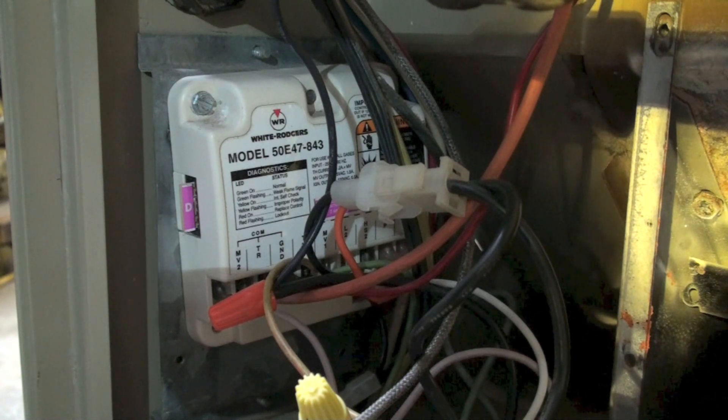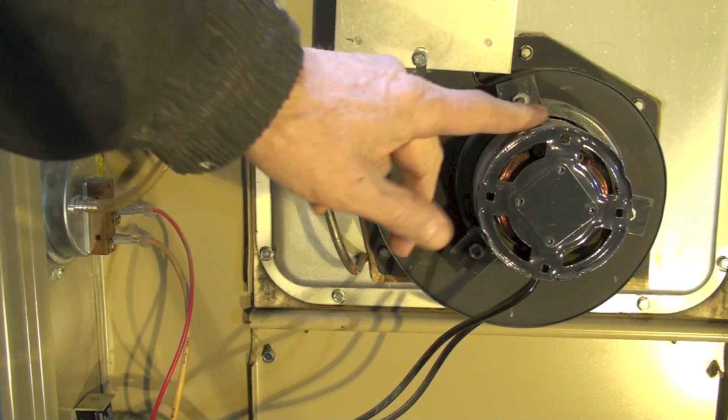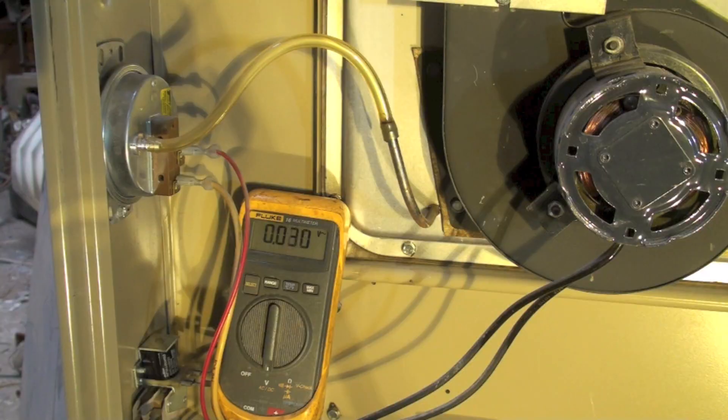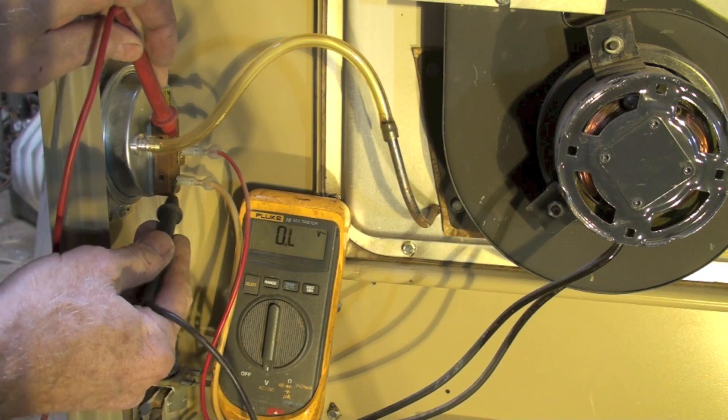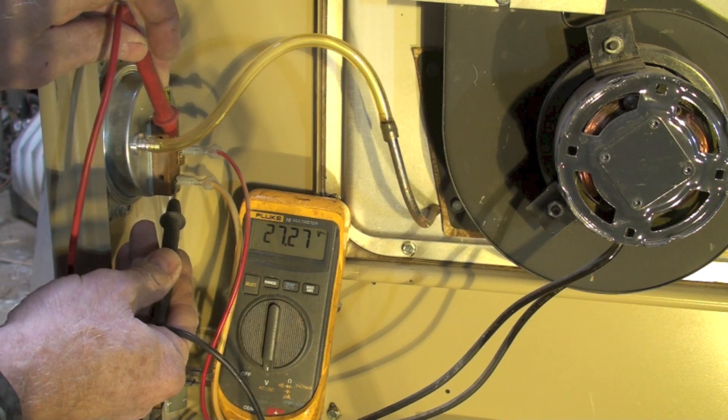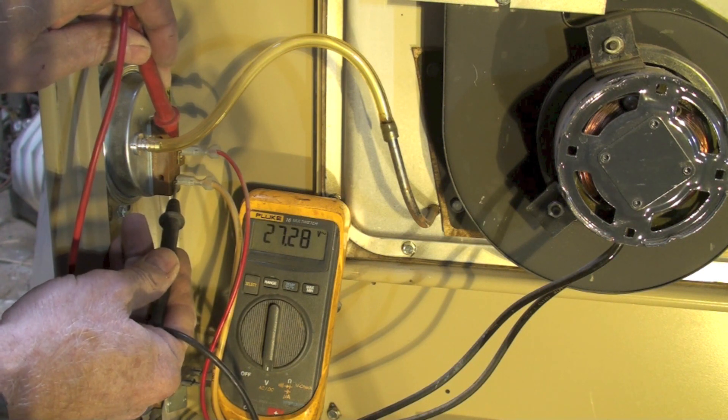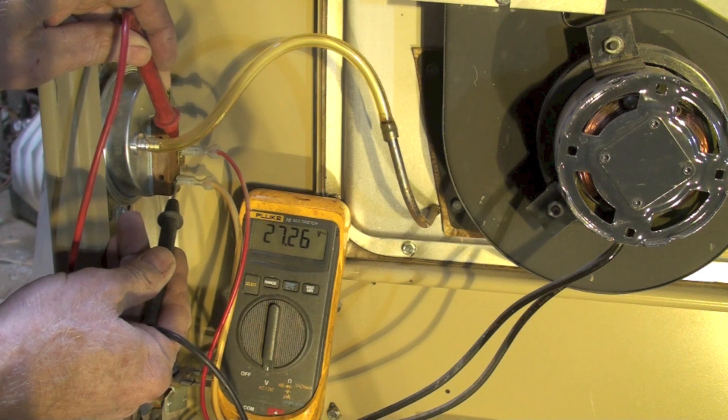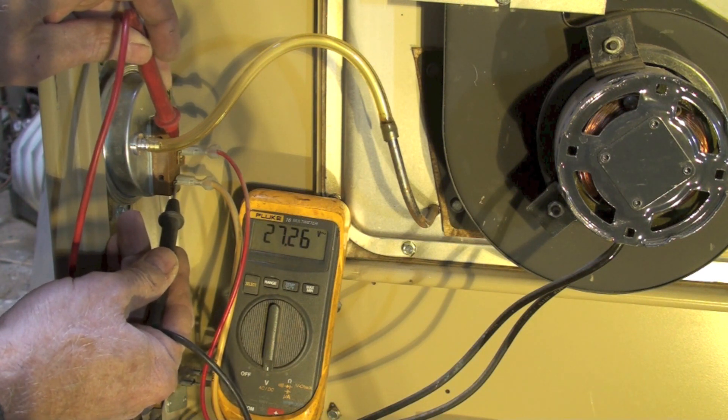Now here's one of the common reasons for this. My inducer's running, pressure switch is right here, but did my pressure switch make? Let's find out. I'm going to go across here. Now you can see I'm showing a voltage. That means the pressure switch hasn't closed, because if it had closed I would read zero across the pressure switch. So what's wrong?